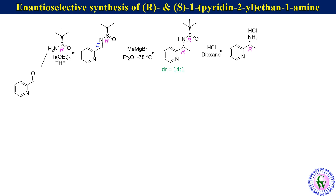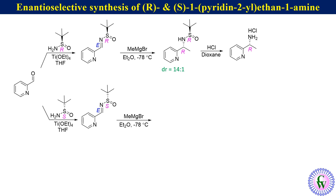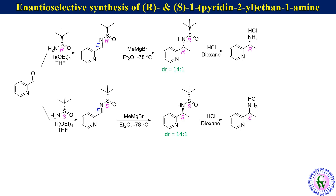Using the same strategy, condensing pyridine-2-carboxaldehyde with S-t-butylsulfinamide will give the S-E-sulfinamide as the major diastereomer, which upon reaction with methyl magnesium bromide will give the S,S diastereomer of the t-butylsulfinyl-protected amine, which upon sulfinyl deprotection with HCl in dioxane will give S-1-(pyridin-2-yl)ethane-1-amine as the HCl salt.